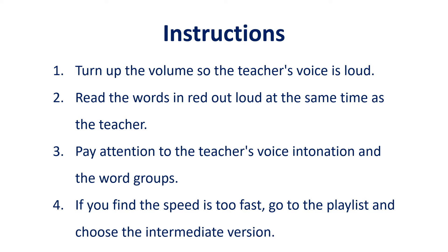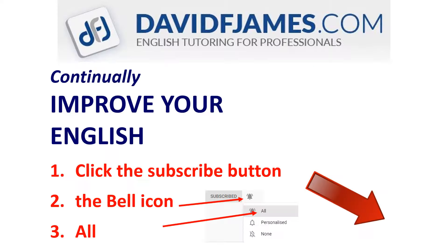1. Turn up the volume so the teacher's voice is loud. 2. Read the words in red out loud at the same time as the teacher. 3. Pay attention to the teacher's voice intonation and the word groups. 4. If you find the speed is too fast, go to the playlist and choose the intermediate version. Before we start, a quick reminder: continually improve your English by subscribing to this channel. Just click the subscribe button, then the bell icon, and then all. Let's begin the reading.